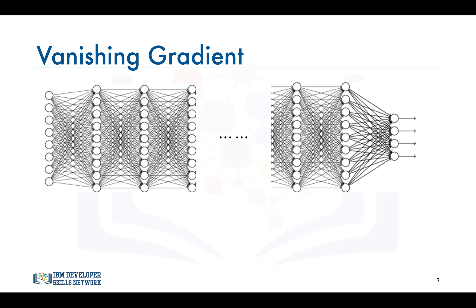This means that the neurons in the earlier layers learn very slowly as compared to the neurons in the later layers in the network. The earlier layers in the network are the slowest to train. The result is a training process that takes too long and the prediction accuracy that is compromised.